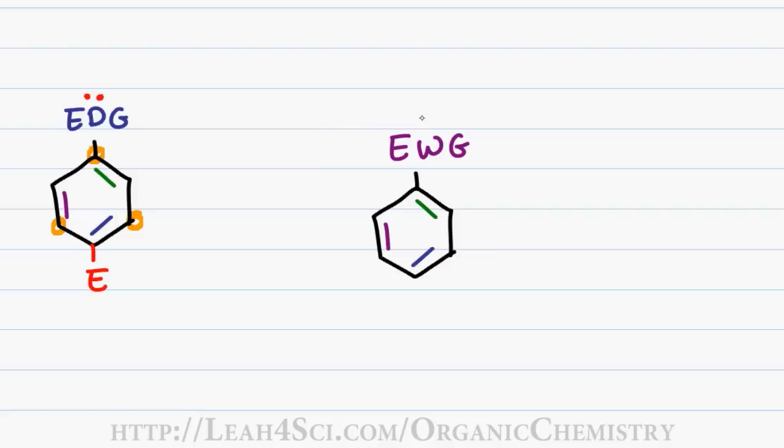Electron withdrawing groups on the other hand are positive or partially positive and this does not stabilize the positive intermediate of the electrophilic aromatic substitution reaction, making the reaction unfavorable and slower when compared to regular benzene. We also talked about how when adding a substituent to the ortho or para position and getting the same resonance intermediates is very unfavorable because we're placing a positive charge directly near that positive substituent making it very unstable.